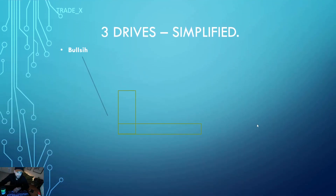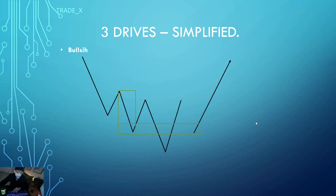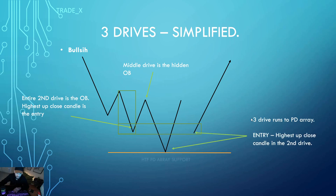Now let's look at a bullish example. We have this displacement leg lower retracement, displacement leg lower drive two retracement, third drive displacement leg lower - drive one, drive two, drive three - into a higher time frame PDA support level or an intermediate level of support. We're looking for price to move away and then come back into the lowest down close candle inside this hidden order block. That is our entry to take the market long. Every time we're witnessing these legs down, this is the market accumulating positions - long - this is accumulation to move the market higher.